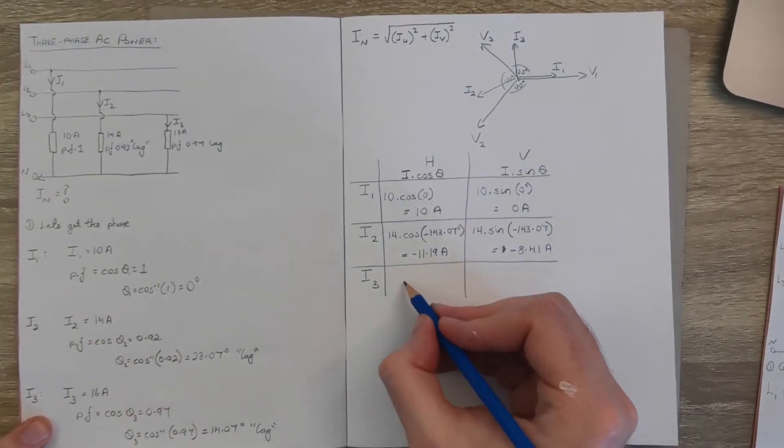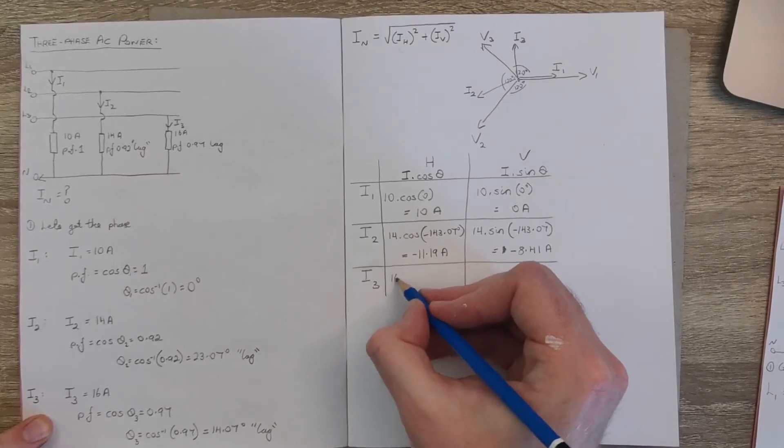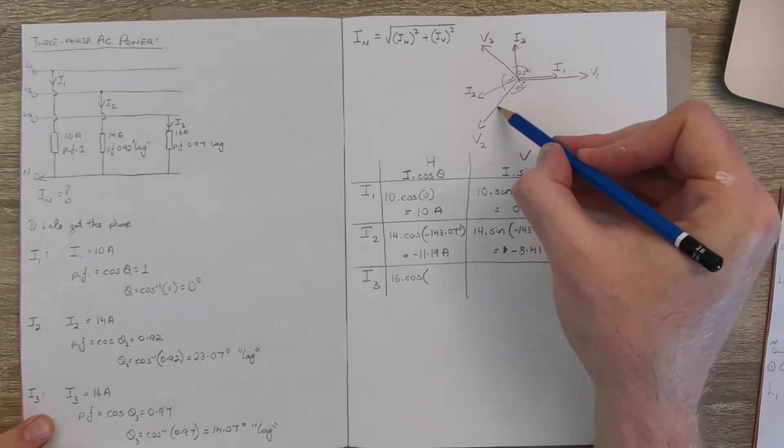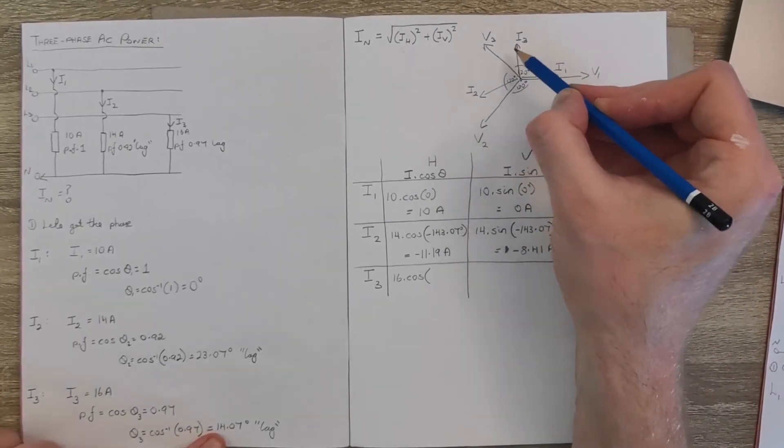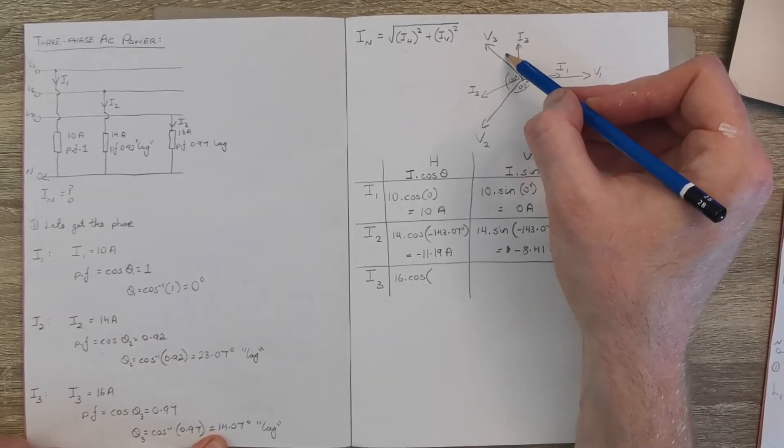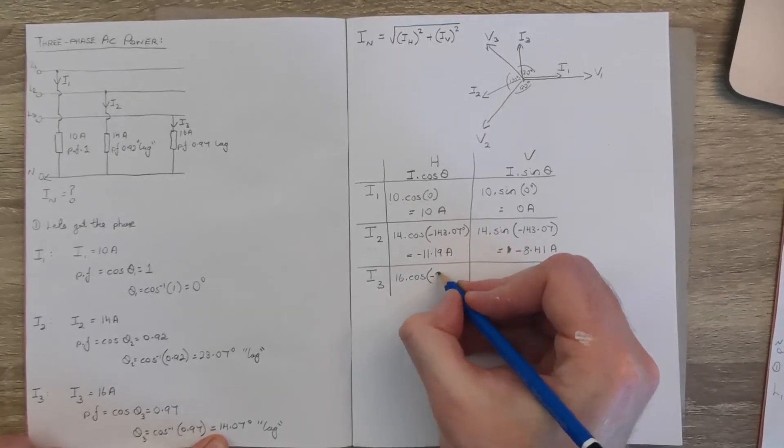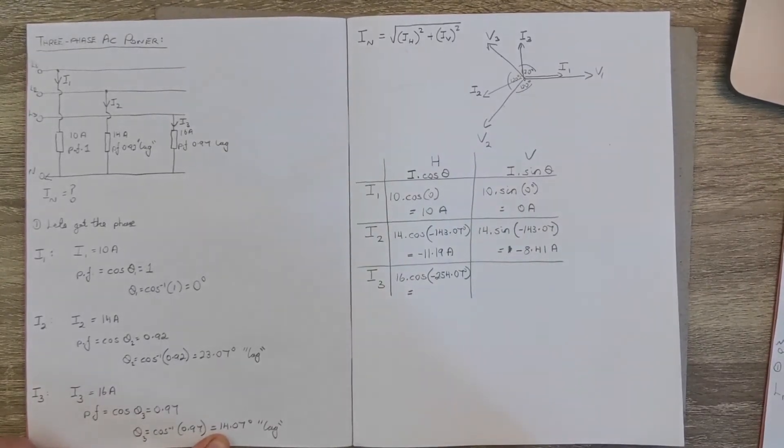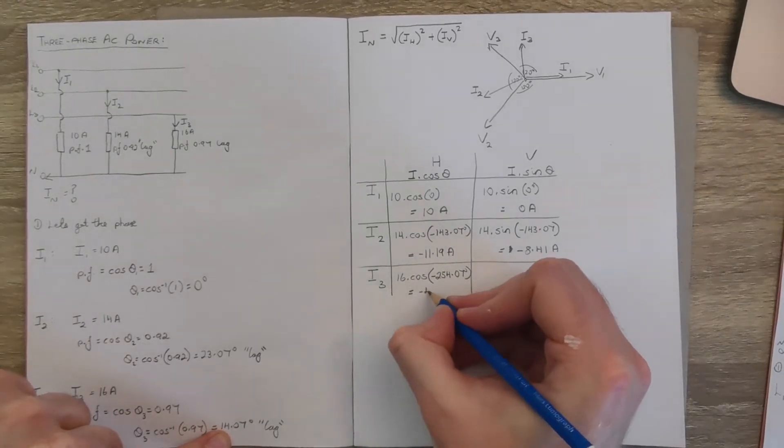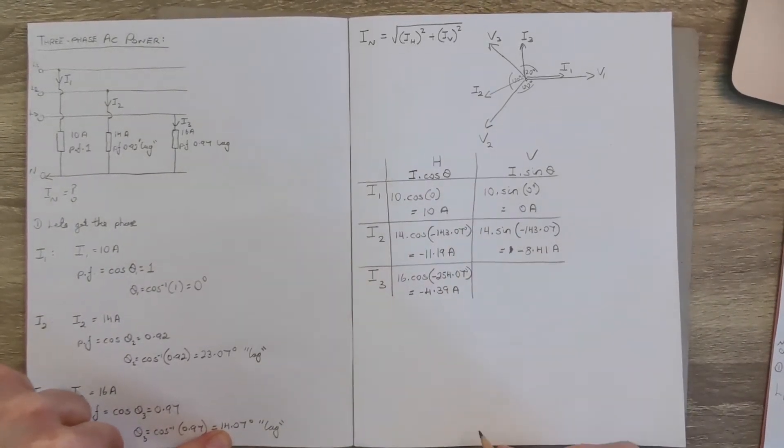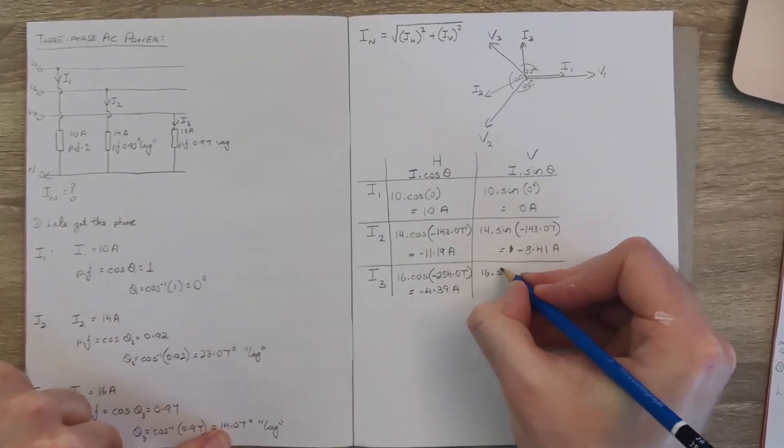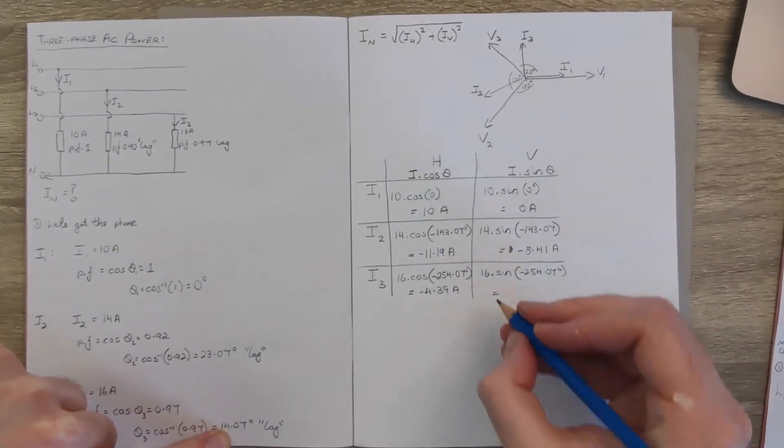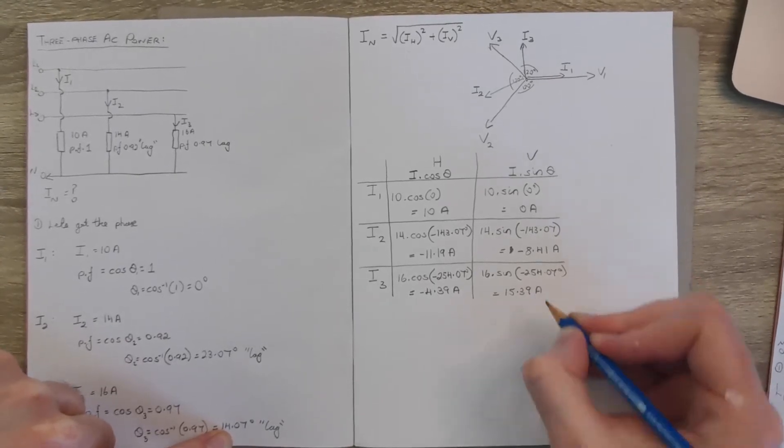Then for i3, we've got 16 times the cosine, so our angle here is going to be minus 120 minus 120 minus 14.07, so we have minus 254.07 degrees, and that comes in at minus 4.39 amps. Same here with sine, this one calculates out at 15.39 amps.